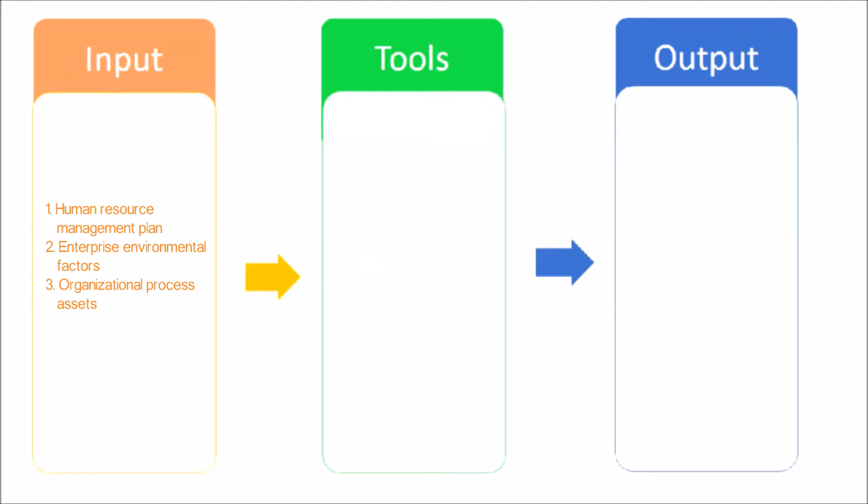Human Resource Management Plan. The Human Resource Management Plan provides guidance on how project human resources should be identified, staffed, managed, and eventually released. Enterprise Environmental Factors. Organizational Process Assets.